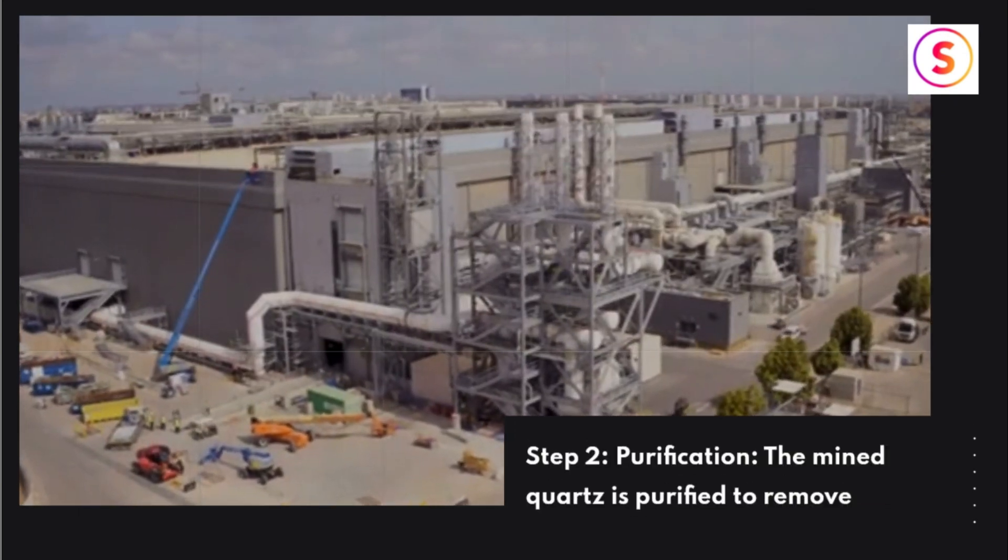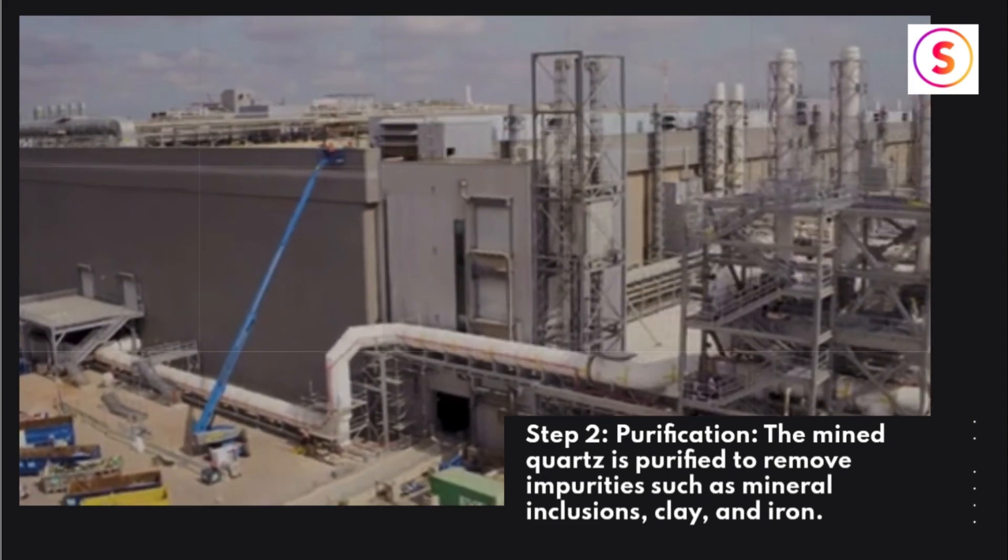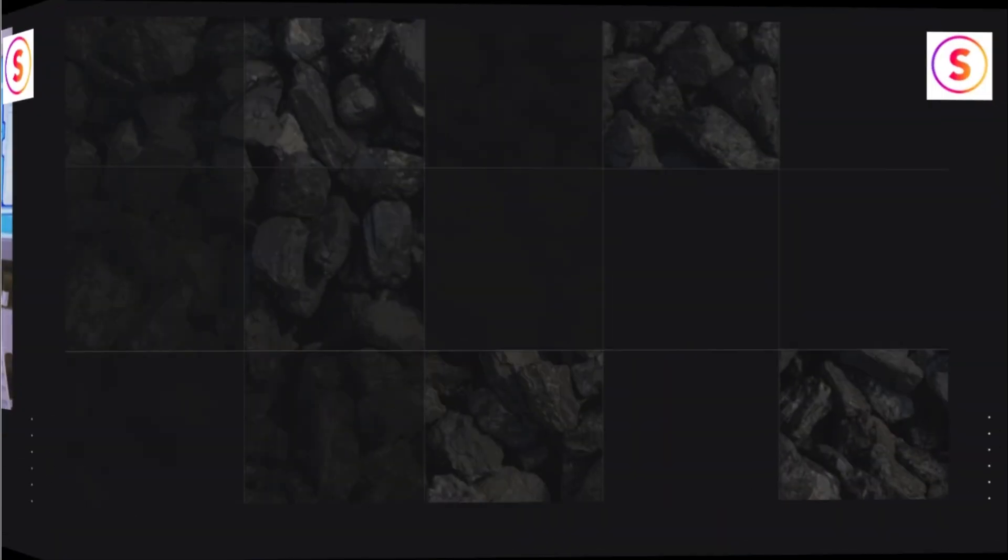Step 2: Purification. The mined quartz is purified to remove impurities such as mineral inclusions, clay, and iron. These impure particles affect conductivity in silicon chips, hence must be cleaned thoroughly.